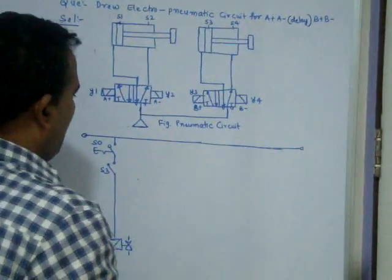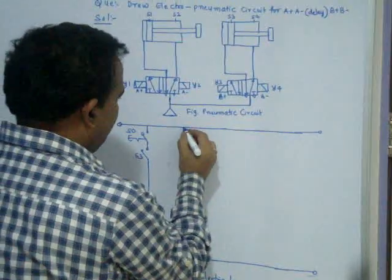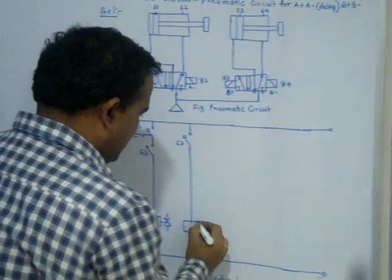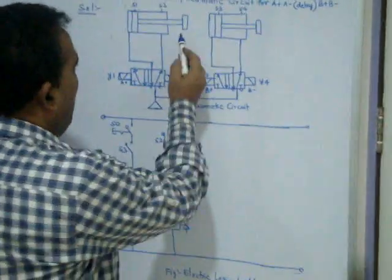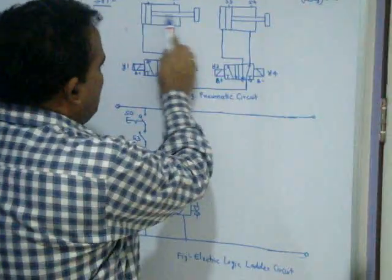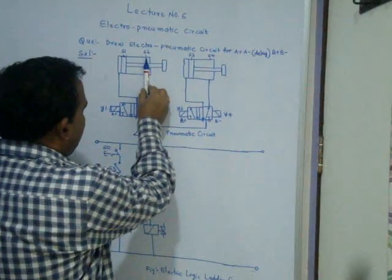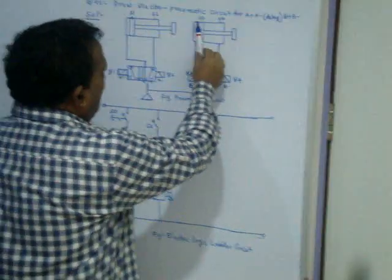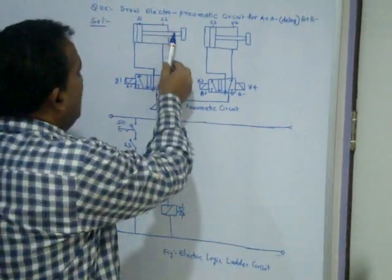When the piston goes to S2, A minus should happen. A minus is nothing but Y2. When it comes back to S1, already S3 is on, and the piston goes to S2 again. If I draw only these two electrical logic lines, the piston just oscillates between S1 and S2 — the second cylinder is not moving at all. So I need to stop this oscillation after one stroke. To prevent this, I must add S2 as a condition so that after reaching S2, the circuit doesn't keep repeating.